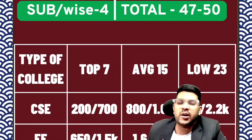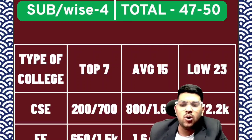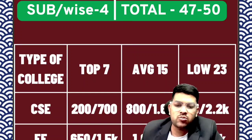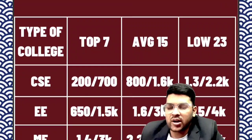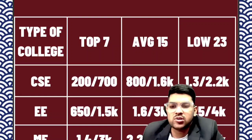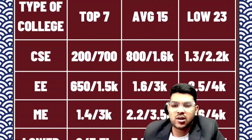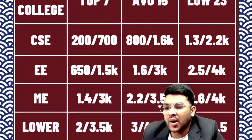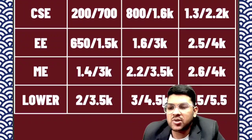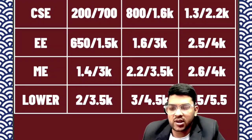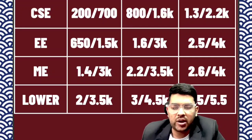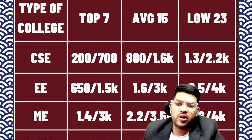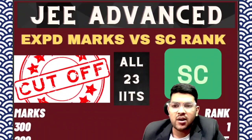For CSE: Tier 1 — 200 and 700 rank for male and female respectively. Tier 2 — 800 and 1,600 rank. Tier 3 — 1,300 and 2,200 rank. After the slash, data is for female students. For Electrical: Tier 1 — 650, Tier 2 — 1,600, Tier 3 — 2,500 for male; check after slash for female. For Mechanical: Tier 1 — 1,400, Tier 2 — 2,200, Tier 3 — 2,600 for male; after slash check for female. Overall, to get any Tier 1 IIT with SC category: 2,000 rank for male, 3,500 for female. Tier 2: 3,000 male, 4,500 female. Tier 3: 3,500 male, 5,500 female. This was the complete information regarding SC category.